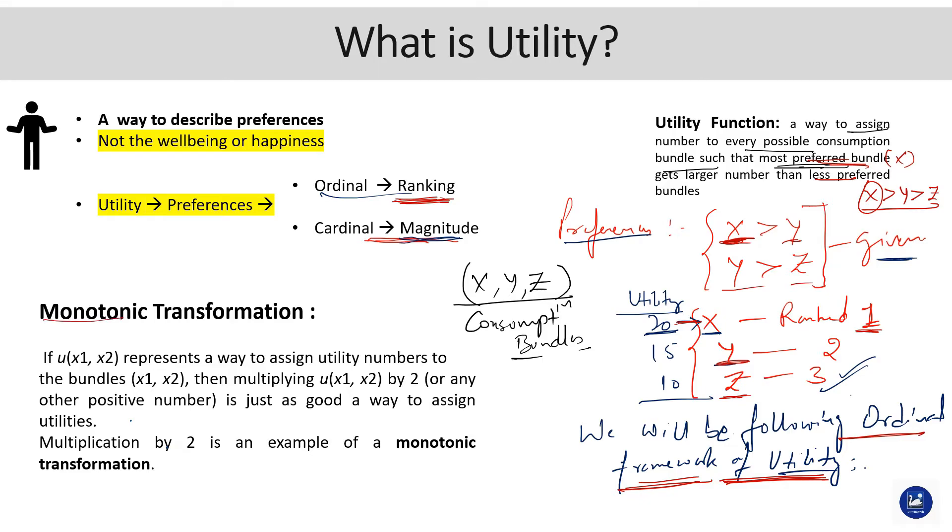Let's move to the concept of monotonic transformation. You will encounter this time and again when dealing with graphical analysis of the utility function or comparative statics. What is being transformed is the utility function. If u(x1, x2) is a function having these two commodities, the utility function represents a way to assign utility numbers to the bundles (x1, x2).